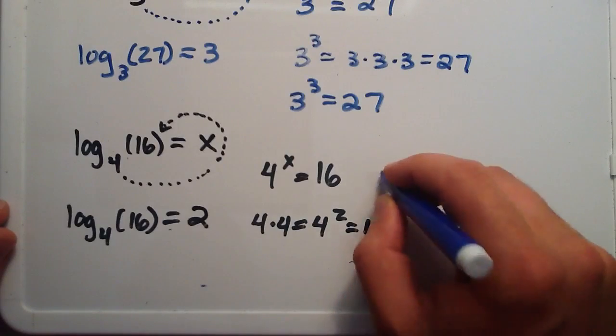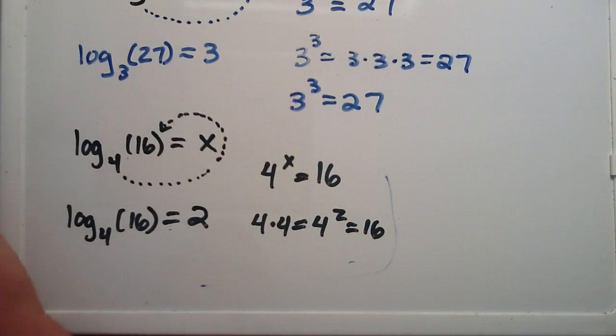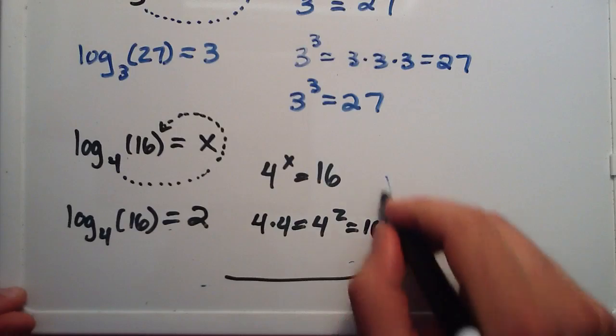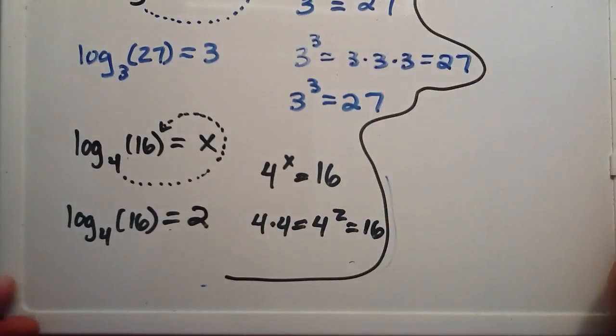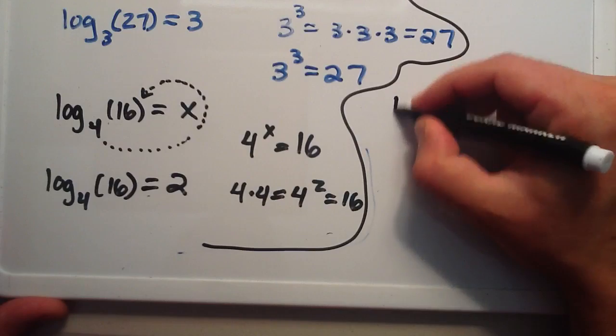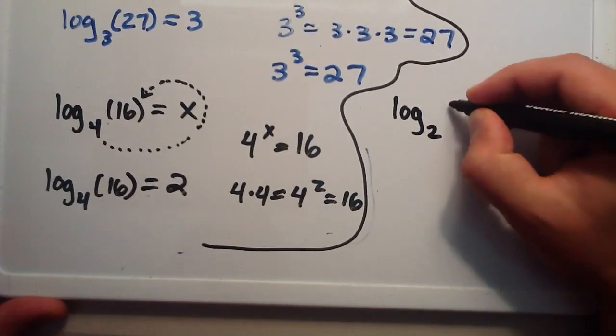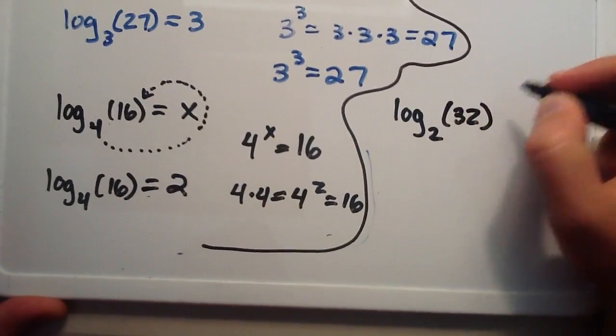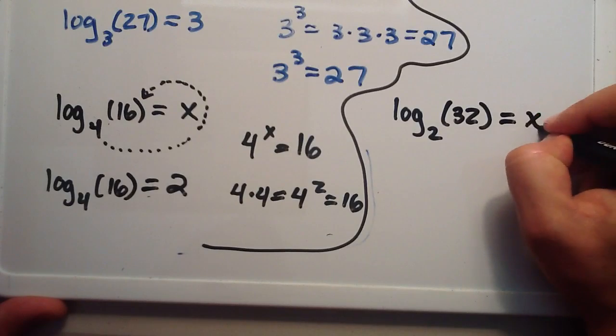So just to let it sink in, I'll do one more example. And then I'll move on and do something else with logarithms. So for the last example, we have log base 2 of 32 equals some number.